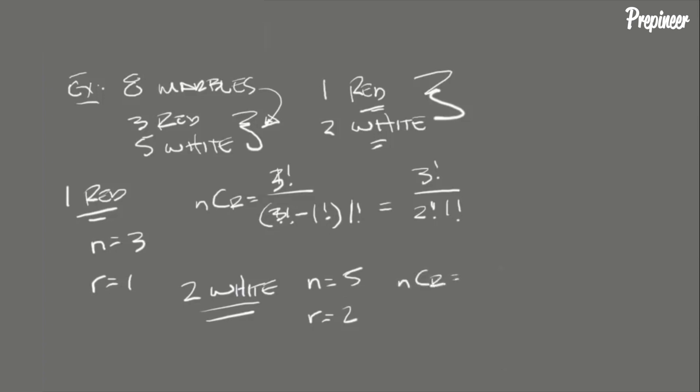...two of the three that we choose to be white, so r equals 2. Plugging that into the equation, we have n equals 5 and r equals 2. To simplify that, that's 5 factorial divided by 3 factorial times 2 factorial. Now to get the total...